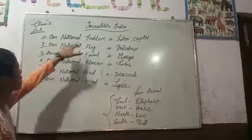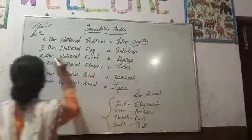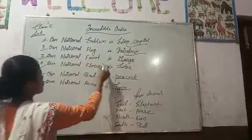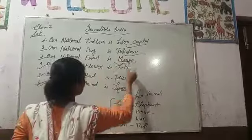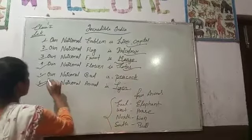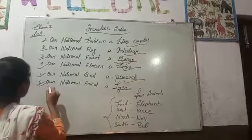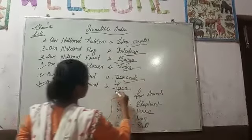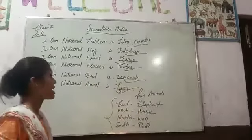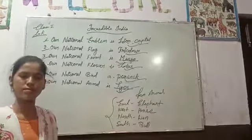Our national emblem is the lion capital. Our national fruit is mango. Our national flower is lotus. Our national bird is peacock. And our national animal is tiger. Thank you.